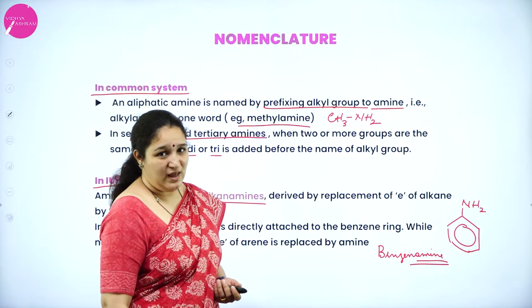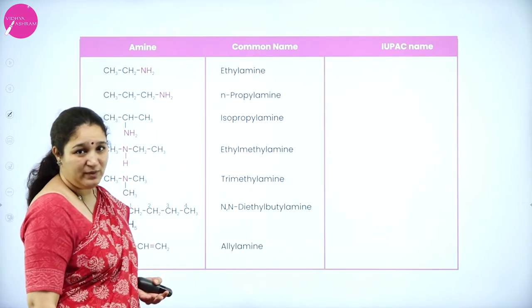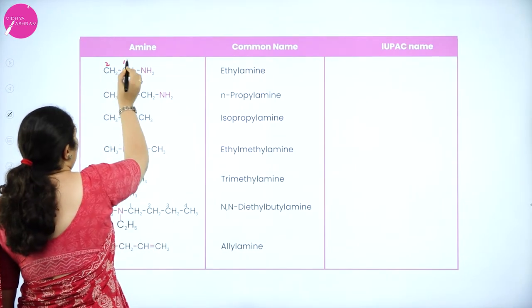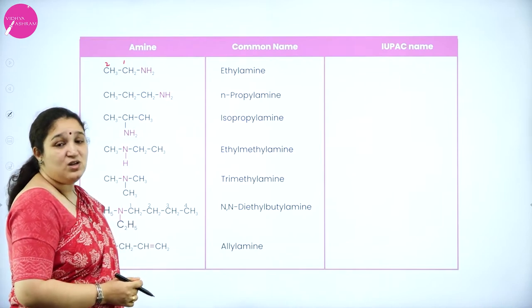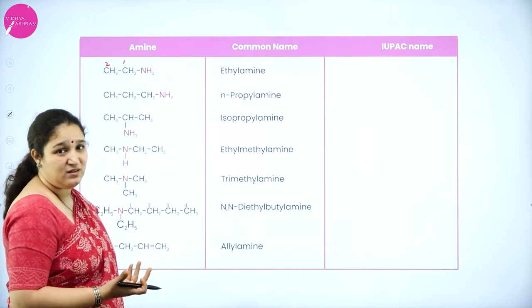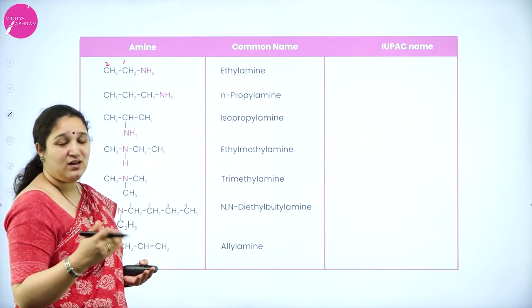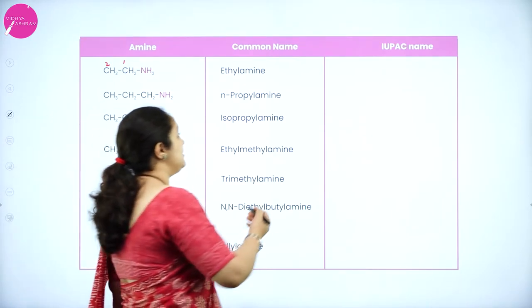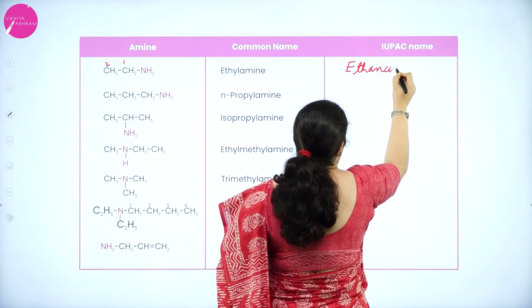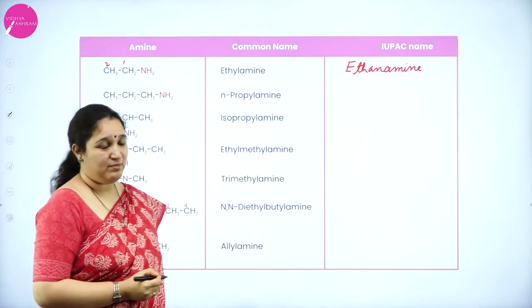Now we will do some examples. I have already given the common names; I shall write only the IUPAC name. In the first example, there are two carbon atoms. When two carbon atoms are present, the hydrocarbon name is ethane — no double bond — so we drop 'e' and write amine. So the IUPAC name is ethanamine.